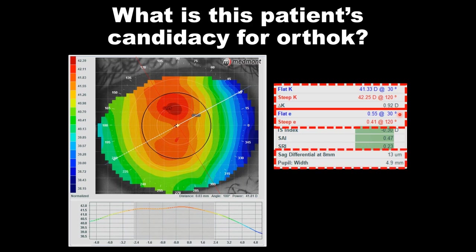Let's look at the sagittal depth differential — measuring the height of the cornea to an 8 millimeter cord and describing not the central corneal astigmatism but the peripheral corneal sill. This patient has a sagittal height difference between the flat and steep meridian of 13 microns. The height going around the clock is virtually the same — only 13 microns difference between flat and steep meridian. That tells me a symmetric ortho-K lens should work quite successfully. When you're over 30 microns, that's when you typically want to think about a toric landing lens.